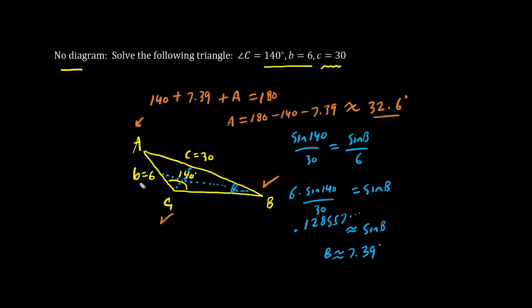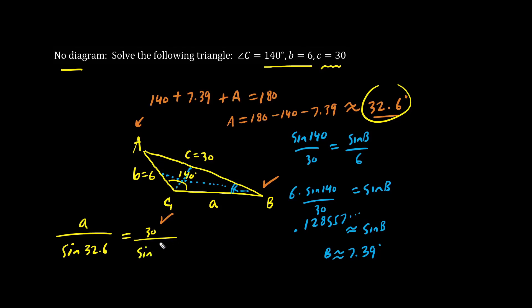So we have all the angles, and we have lengths b and c. Let's also figure out length a. This lowercase a represents the length. We have a over sine A, and angle A happens to be around 32.6 degrees — keep all those decimals in your calculator. This equals c, which is 30, over sine of C, which is 140. We solve for a by multiplying both sides by sine 32.6. Using your calculator, we get a is approximately 25.2 units.